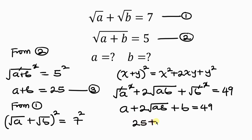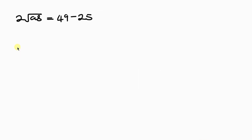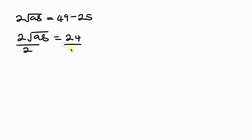We have 25 plus 2 root AB equal to 49. Moving 25 to the right-hand side, we get 2 root AB equal to 49 minus 25. Simplifying, 2 root AB equals 24. Dividing both sides by 2, this 2 cancels out, leaving behind the square root of AB equal to 12.